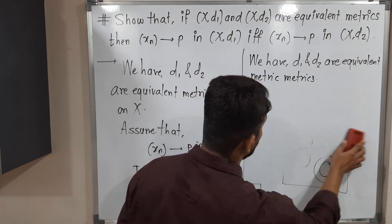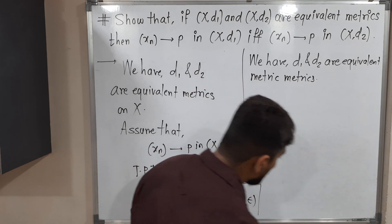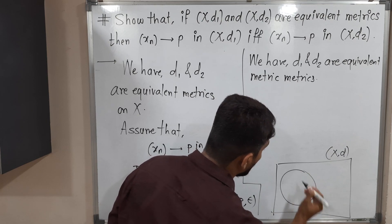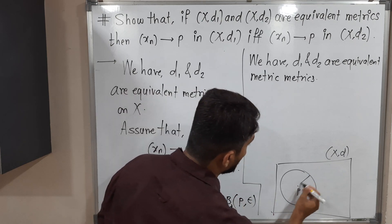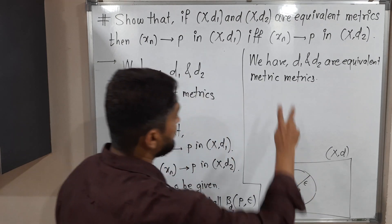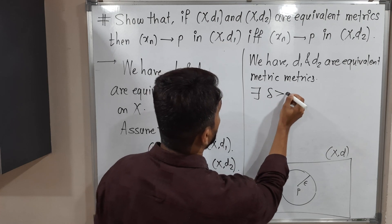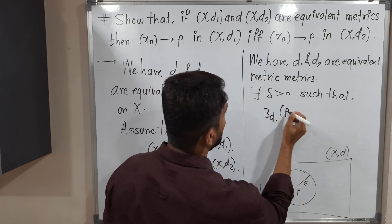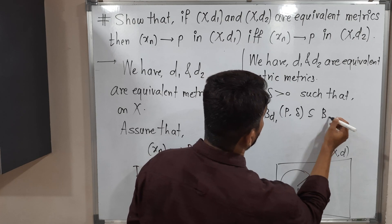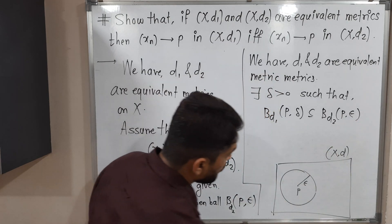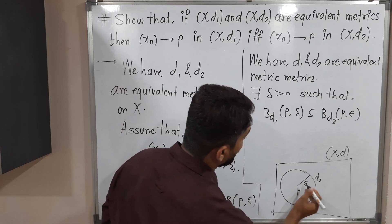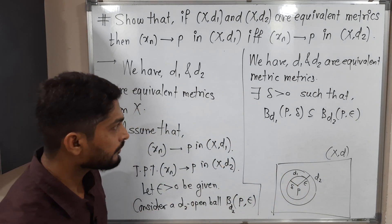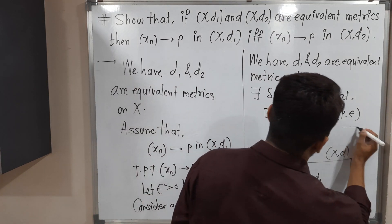By definition of equivalent metrics, this D2 open ball contains some D1 open ball. This is a metric space (X, D). We have a D2 open ball with center P and radius epsilon. Since the metrics are equivalent, we can find some delta greater than 0 such that the D1 open ball with center P and radius delta is a subset of the D2 open ball with center P and radius epsilon. Let us call this statement (1).